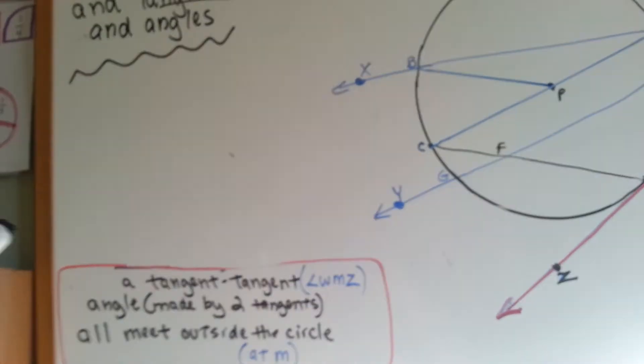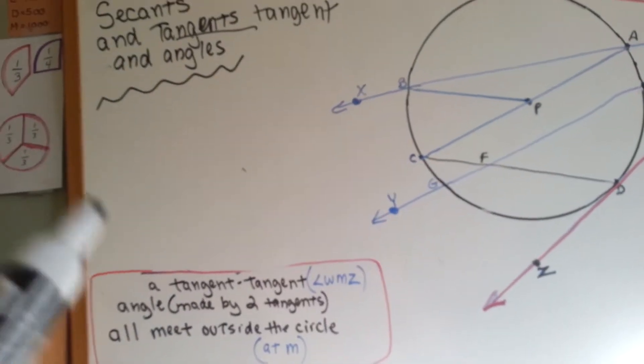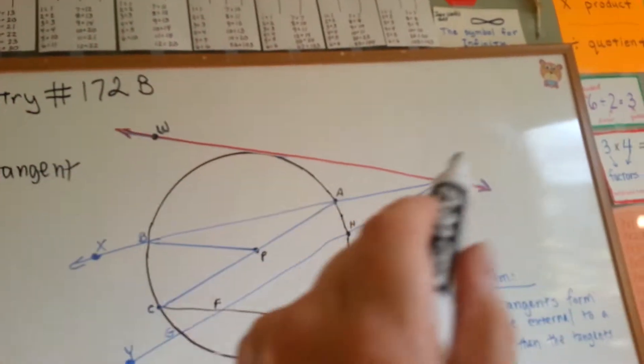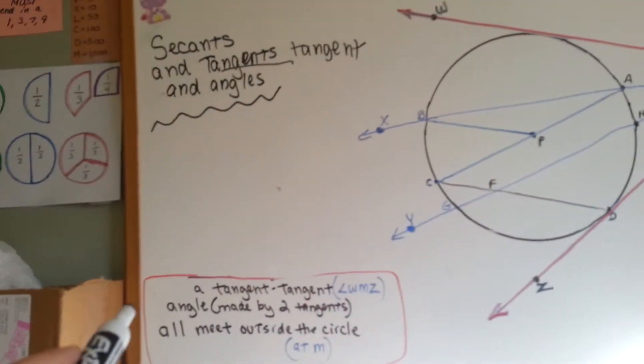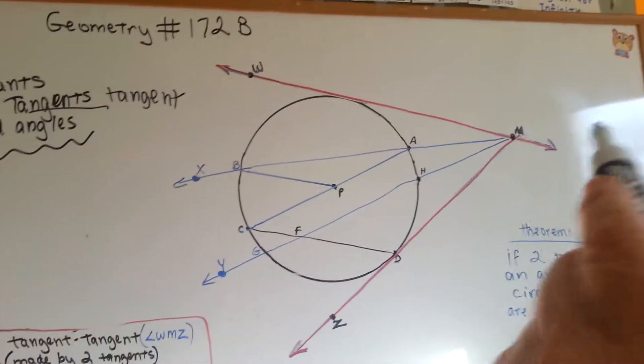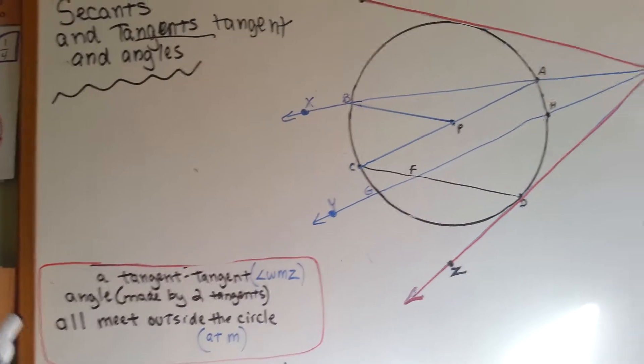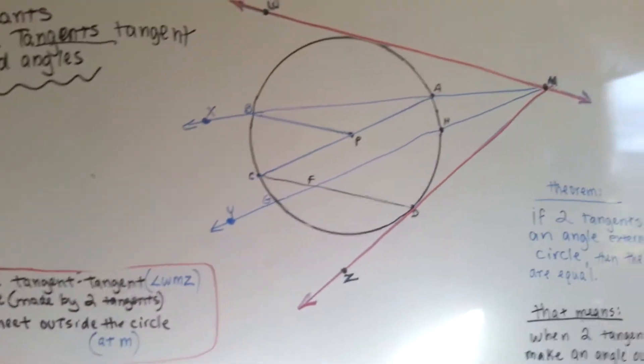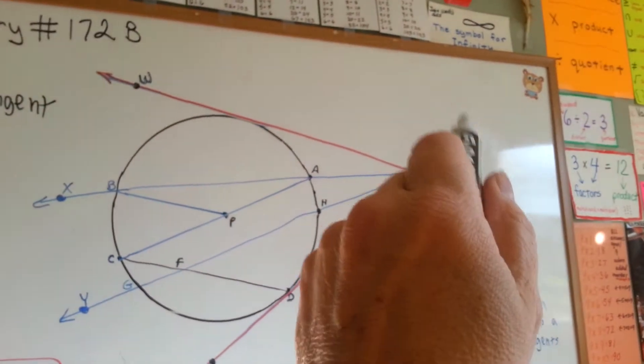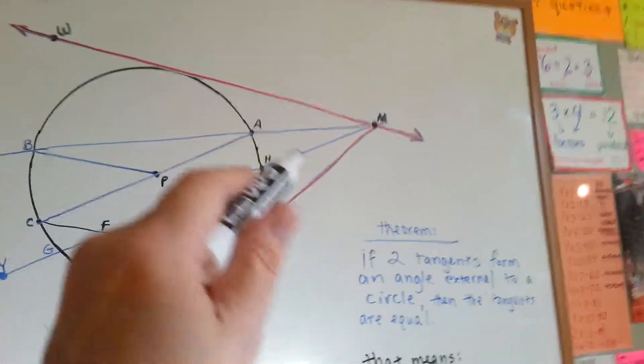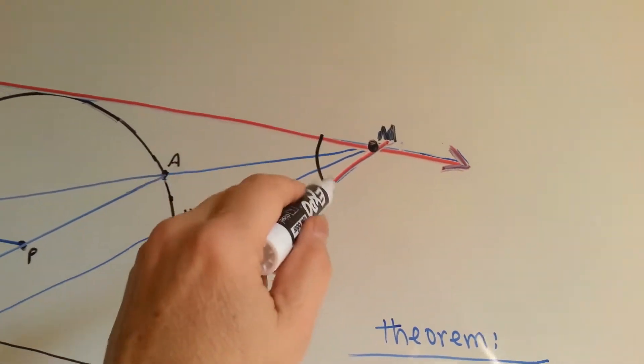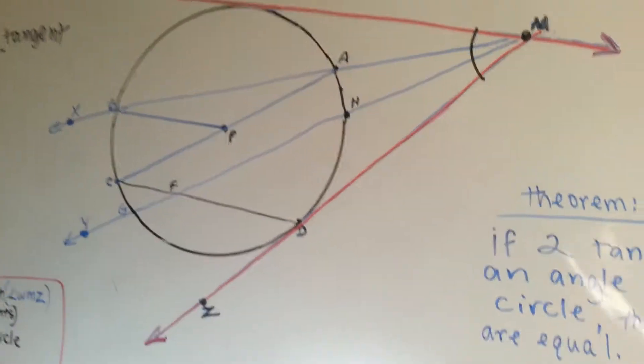So when you have a tangent and a tangent like angle W, M, Z, they're made by two tangents, see them? They all meet outside the circle, the exterior, so the vertices would lie outside of the circle. So right here, this would be the angle of the two tangents, see it?